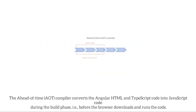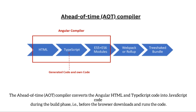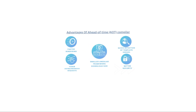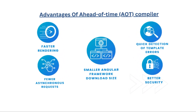The Ahead-of-Time (AOT) compiler converts Angular HTML and TypeScript code into JavaScript code during the build phase — before the browser downloads and runs the code. Its advantages include faster rendering, fewer asynchronous requests, smaller Angular framework download size, quick detection of template errors, and better security.